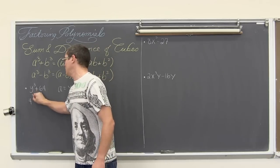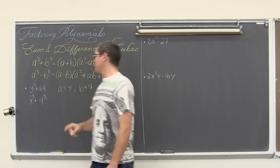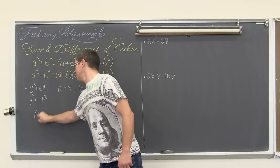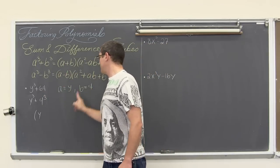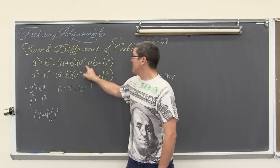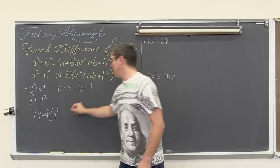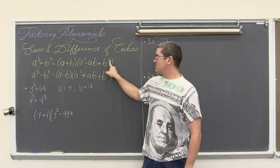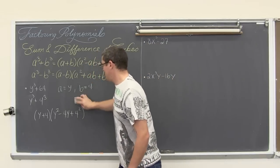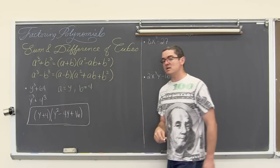You may also want to write this as y cubed plus 4 cubed so you can really see that pattern. It is going to factor out to be — since a is y — y plus 4, times a squared which is y squared, minus ab which is 4y, plus b squared which is 4 squared, or 16. So our answer is y plus 4 times y squared minus 4y plus 16.